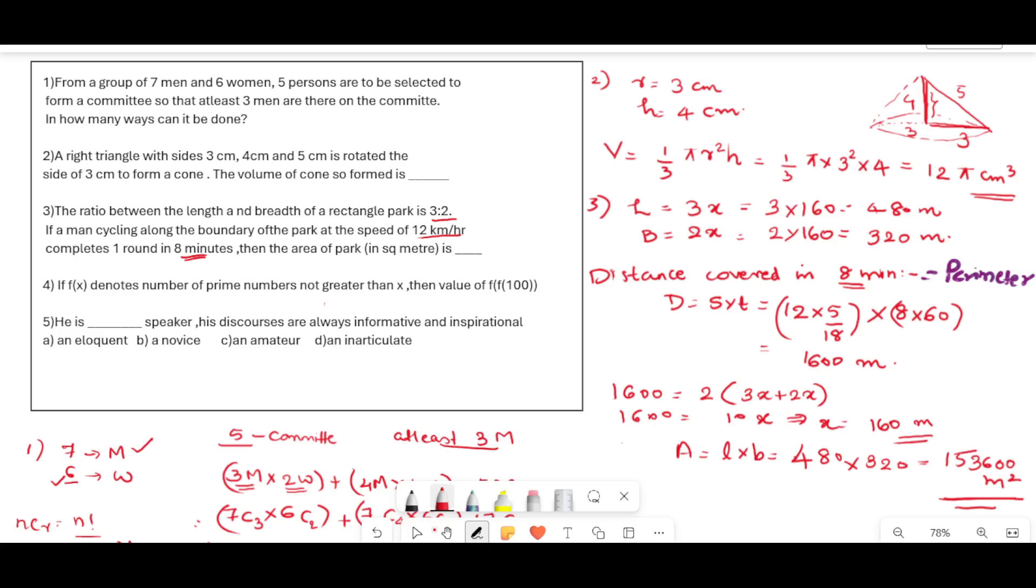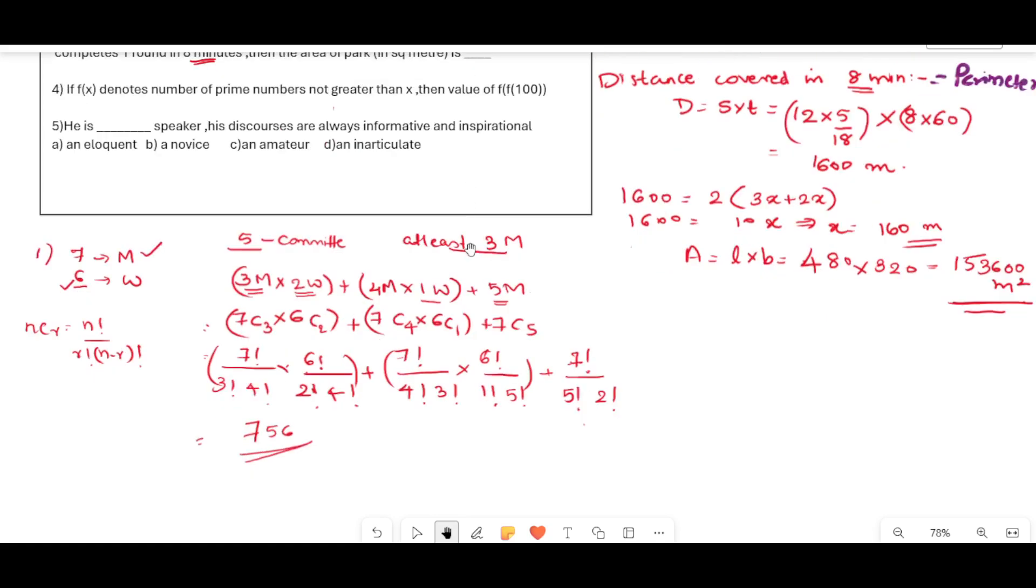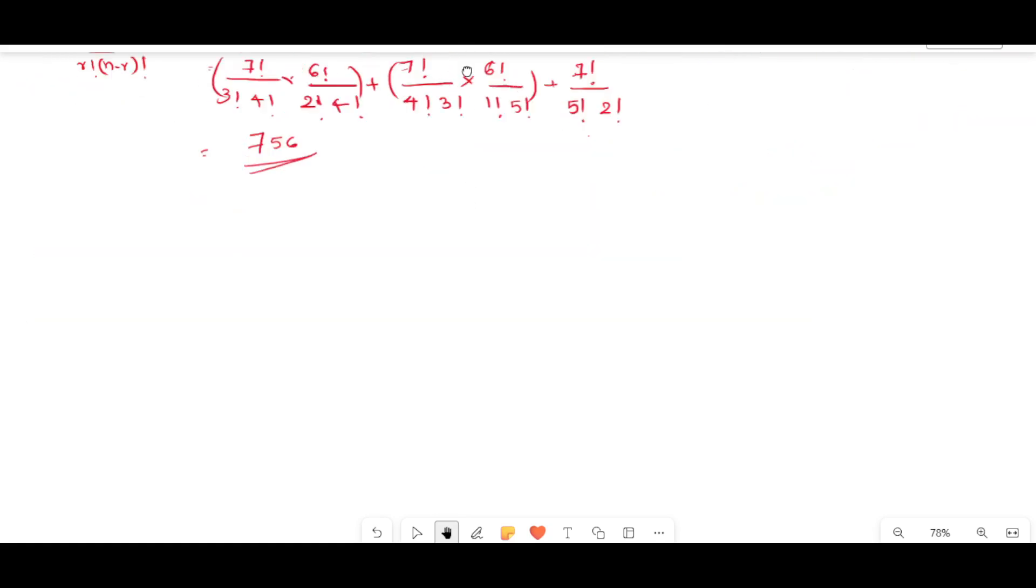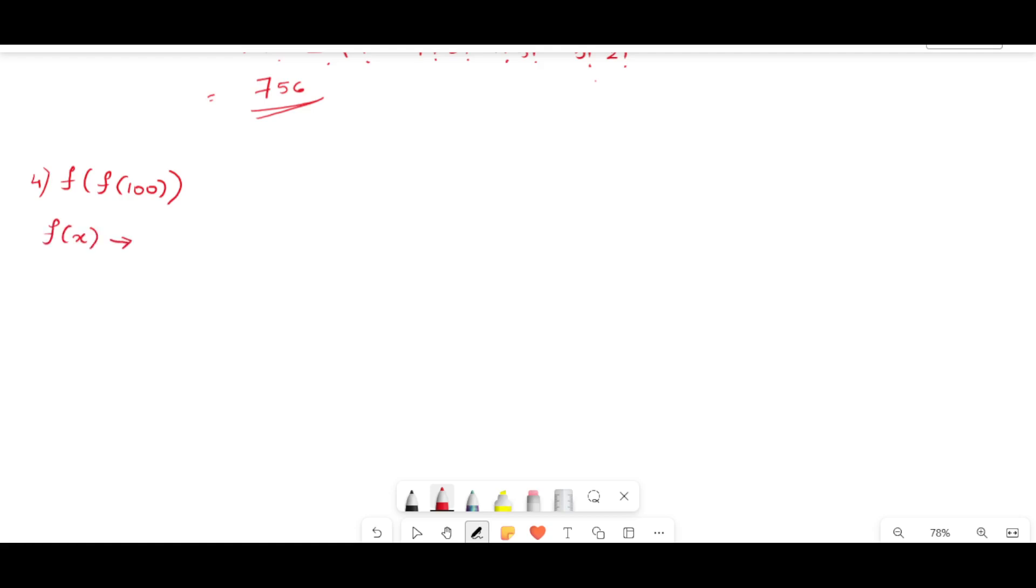Next we will move to the fourth question. If f(x) denotes the number of prime numbers no greater than x, than the value of f(f(100))? What is f(x)? f(x) denotes the number of prime numbers greater than x. That is to find, this is the fourth question, to find f(f(100)).